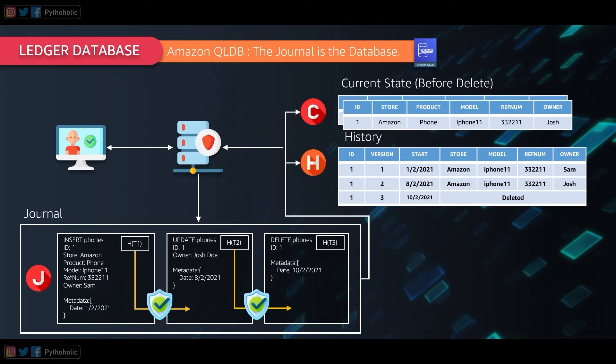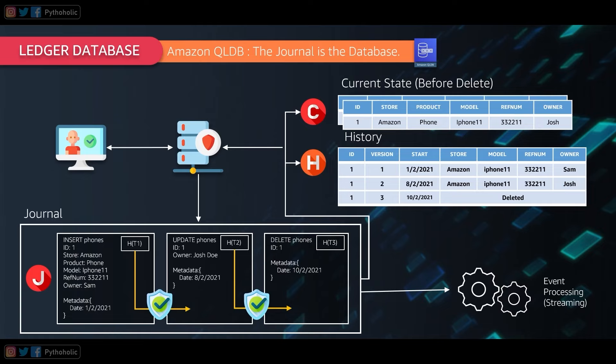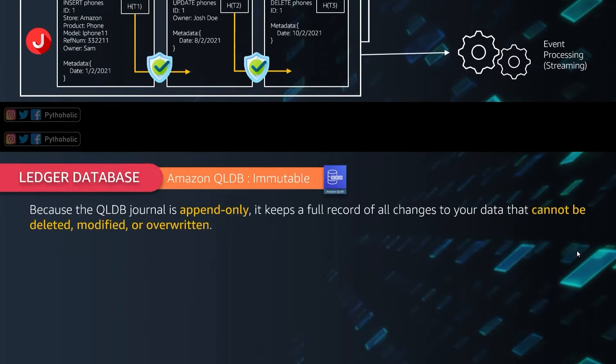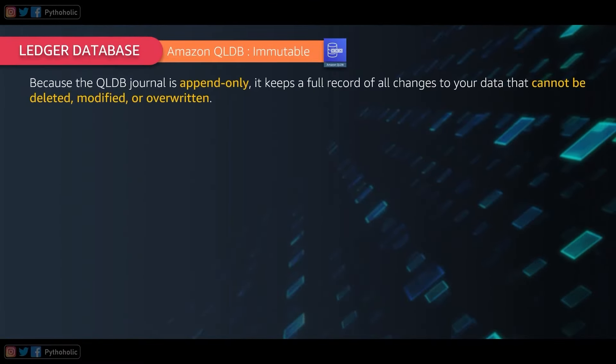You can create journals to keep track of your transactions, and using streams we can send each revision in real time to Amazon Kinesis Data Streams for further processing. But you must be wondering: what exactly makes it immutable? Let's check that out.